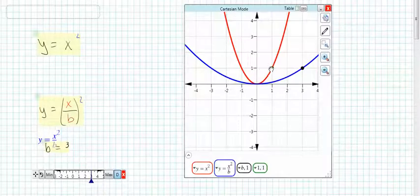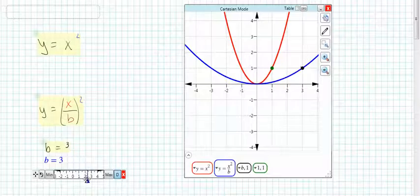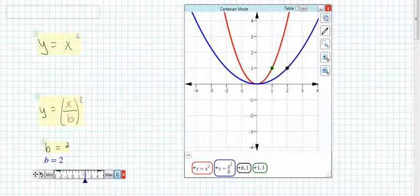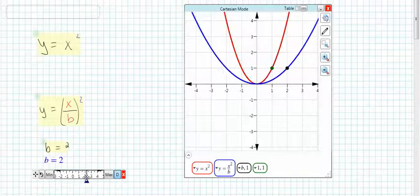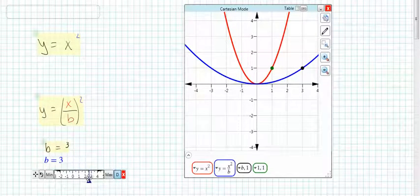Point 1, 1 is one unit away from the y-axis. When b is 3, it's now 1, 2, 3 units away. Or if I make this 2, it's 2 units away. If I make it 1, it's 1 unit away. If I make it 0, it's 0 units away, and so forth. So, whatever b is, is the horizontal stretch.